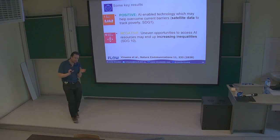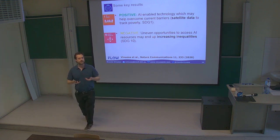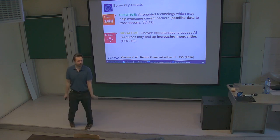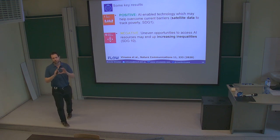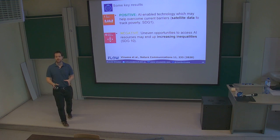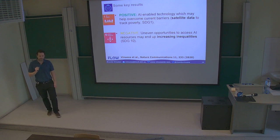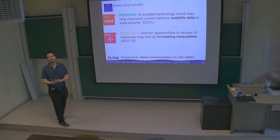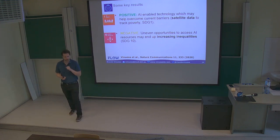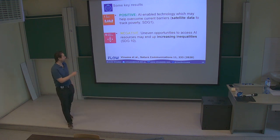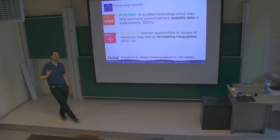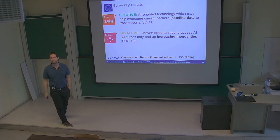Overall, when we have positive effects of AI, it is typically because a new technology is enabled by these data-driven methods—we can now do something we couldn't before. One example is SDG 1, no poverty, where it's possible to use satellite data and analyze it with convolutional neural networks to track areas of poverty. Generally, the negative effects of AI come when you increase inequalities—if the future relies on data-driven methods and high-performance computing, and not everybody has equal access, then we exacerbate existing inequalities. AI is a double-edged sword.